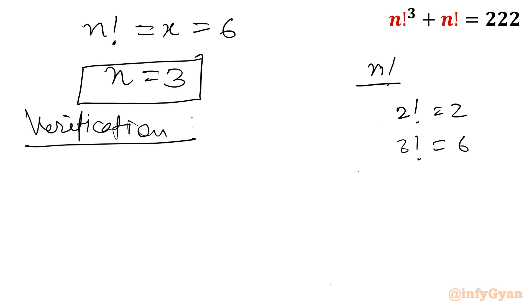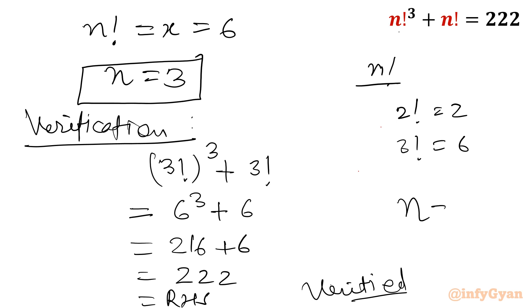Verification. You can simply put over there 3 factorial whole cube plus 3 factorial and it should come out 222. So 3 factorial that means 6 cube plus 6, which is 216 plus 6, equals 222, which is our RHS. Hence, verified. That means n is equal to 3 is our true solution for the given cubic factorial equation.